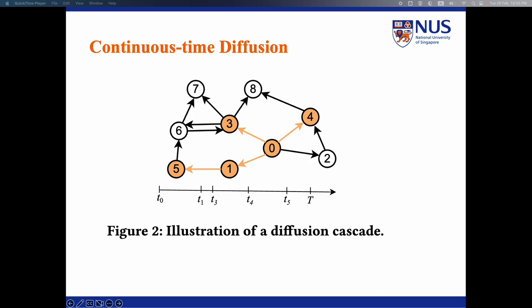First, we consider continuous time diffusion in the following directed graph. Suppose the diffusion starts at node 0 at time t0. It then influences node 1, 3, 4 at time t1, t3, t4 respectively. Then node 1 influences node 5 at time t5, as shown in the timeline below.